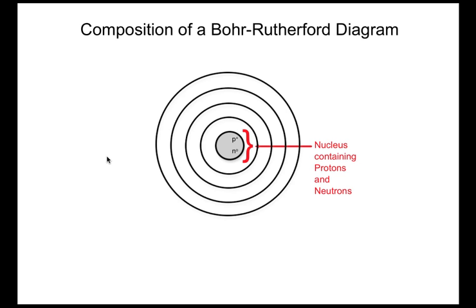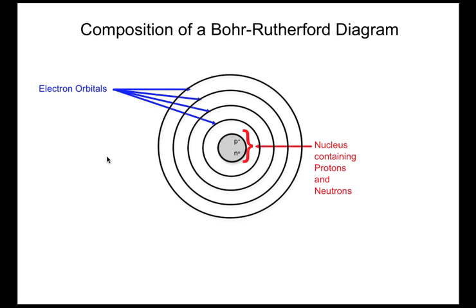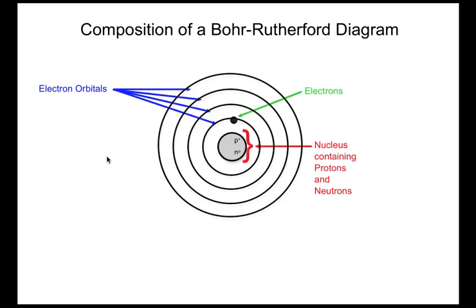Bohr-Rutherford diagrams are comprised of the nucleus in the middle. This is where we find the protons and the neutrons. It's made up of electron orbitals, that is the area of space surrounding the nucleus where we find the electrons, and the actual electrons themselves.